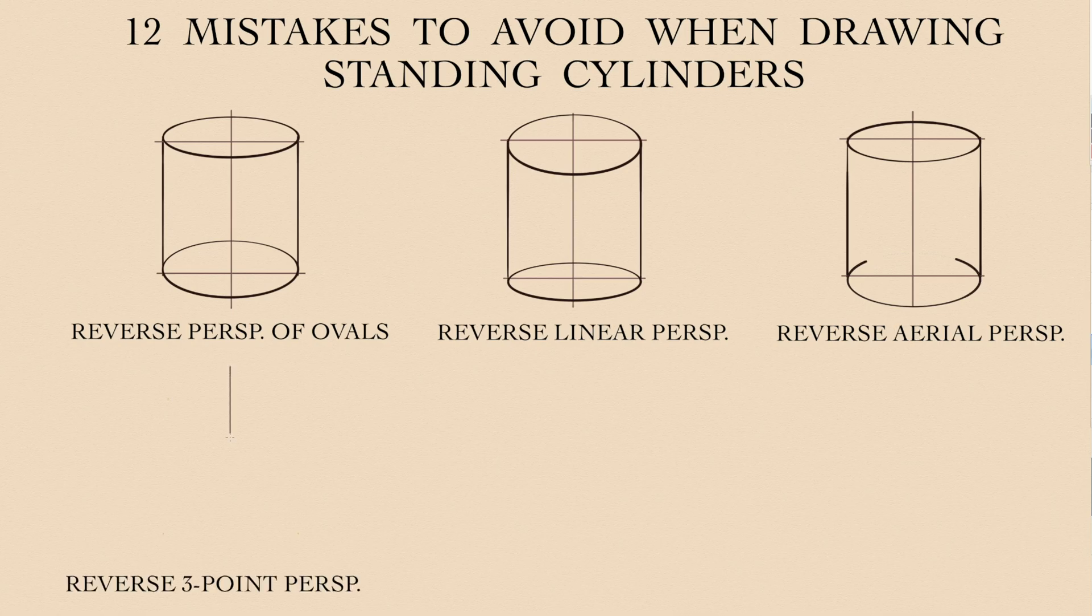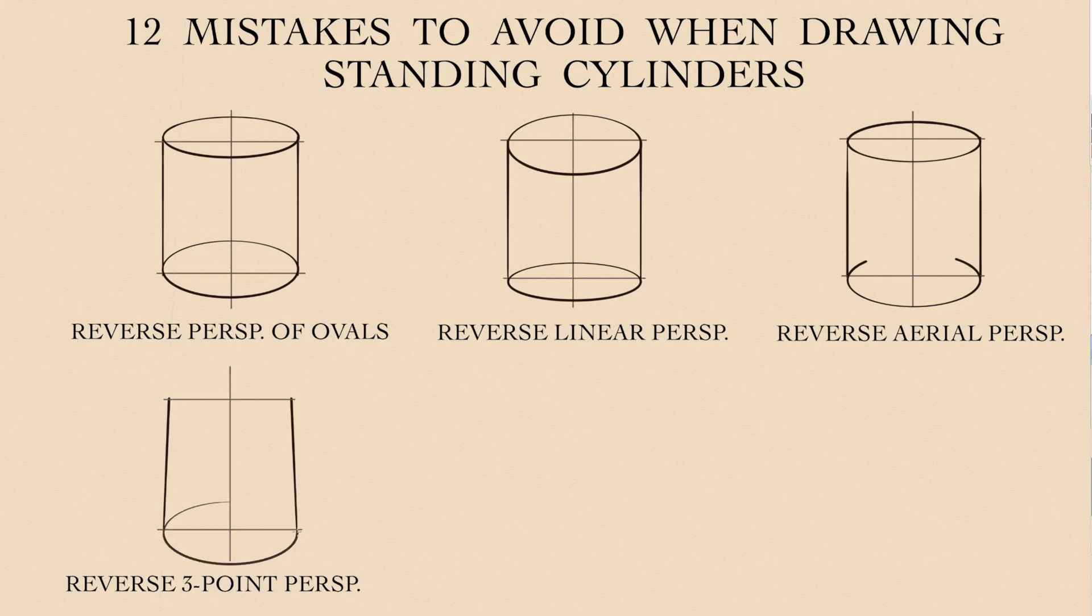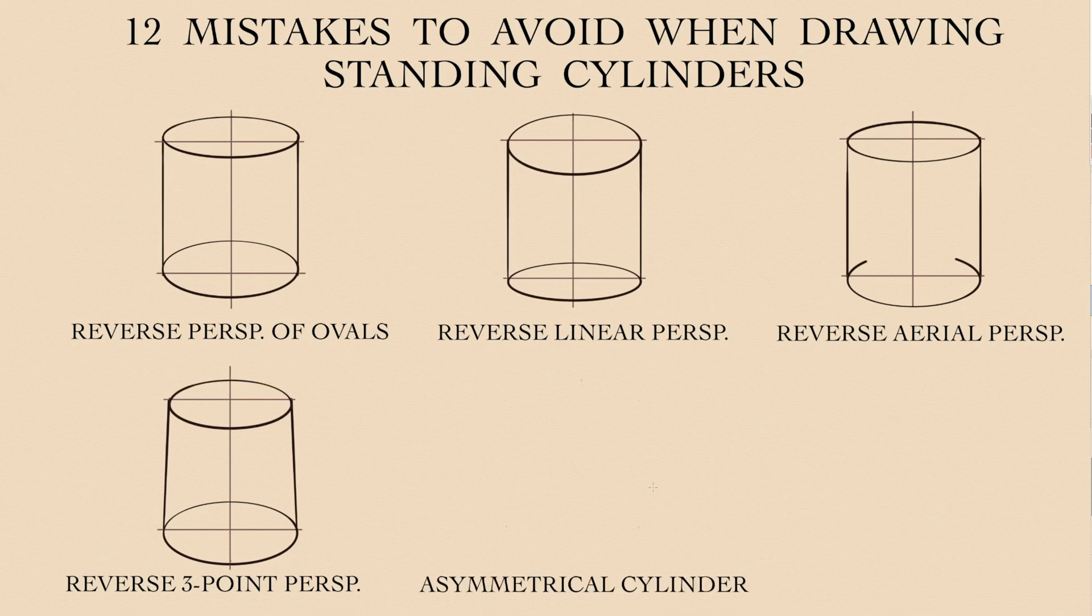When drawing a cylinder in the three-point perspective, you must ensure that the vertical vanishing lines are converging, not diverging. This object has not cylindrical but conical shape. Another mistake is drawing an asymmetrical cylinder. Its vertical axis is not in the centre.